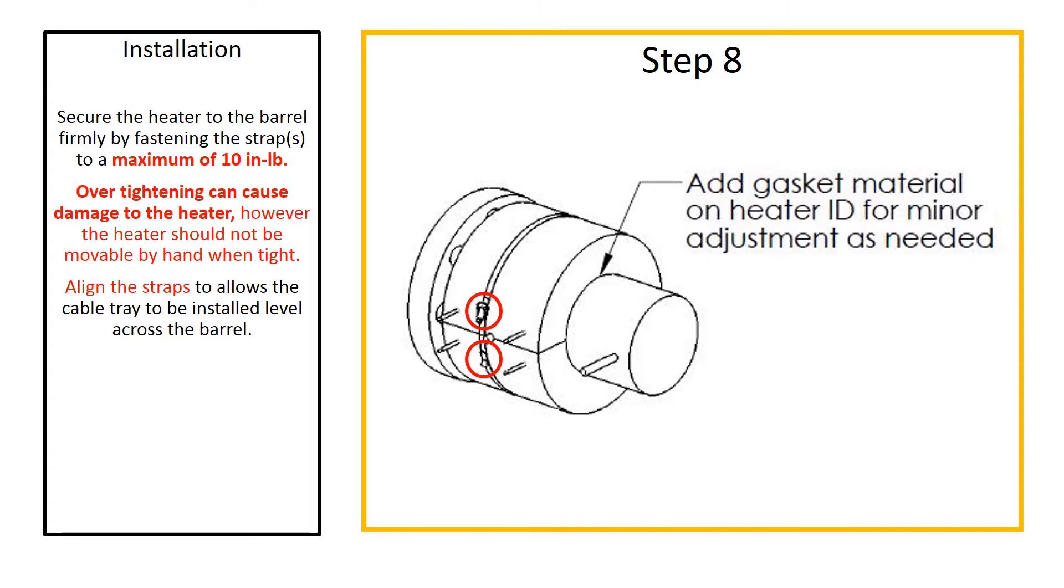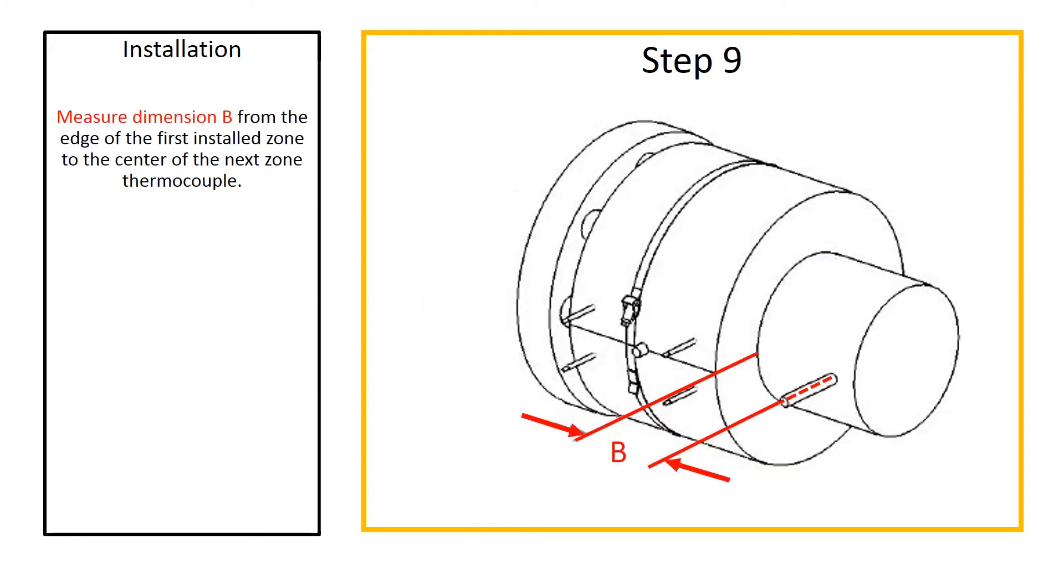However, the heater should not be movable by hand when tight. Be sure to align the straps to allow the cable tray to be installed later. Then measure the distance from the edge of the first installed zone to the center of the next zone thermocouple. Recall the goal is to properly position the thermocouple penetrations so there are no gaps between TCS sections once installed.